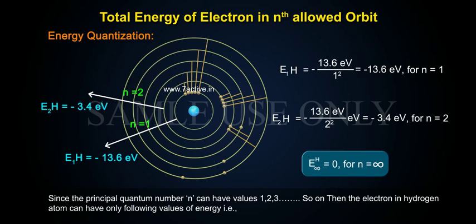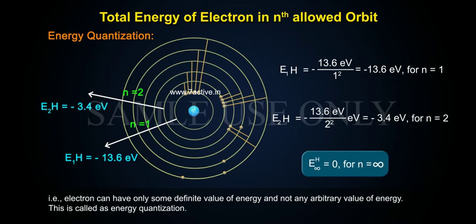E infinity H equals to 0 for N equals to infinity. That is, electron can have only some definite value of energy and not any arbitrary value of energy. This is called as energy quantization.